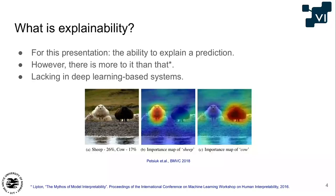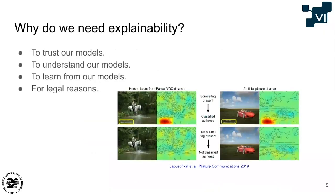With explainability we can do this sort of analysis, but unfortunately this is not something inherent to deep learning systems, which is the standard method now to work with in computer vision. So why do we need explainability? There are many reasons, but first: trust — making trustworthy models.